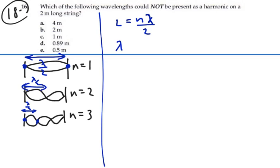Hence, the wavelength as a function of n equals two times the length divided by n, where n is an integer number: one, two, three, four, and so on.